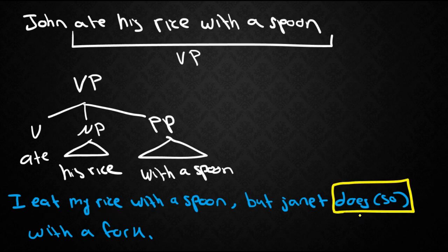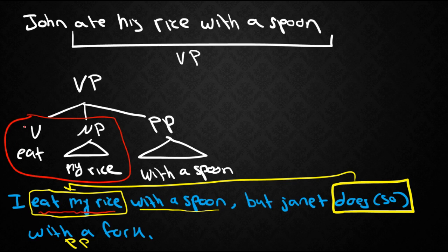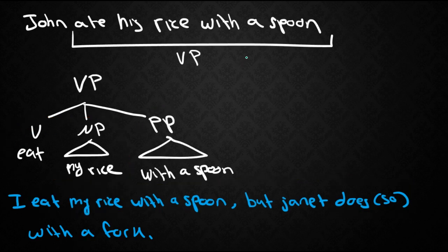So now what does this does so here stand for? We already have the PP here with a fork so we're not going to need this. What does so refers to then is eat my rice. So then what we're looking at here is that eat my rice is a constituent. It forms a constituent without with a spoon. Again the flat structure here cannot show us how only this can become a constituent without this.